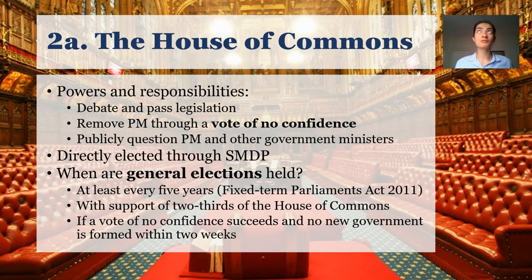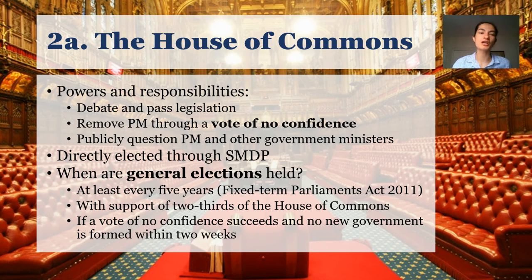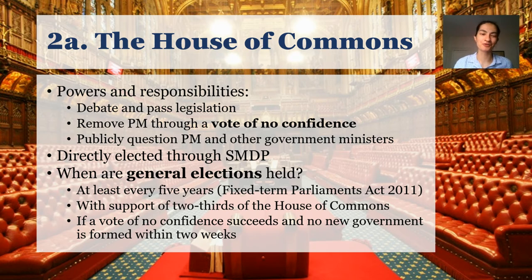Under a law called the Fixed Term Parliaments Act 2011, parliament decided that a general election must be held at least every five years. Before that, it was essentially in the power of the prime minister to advise the monarch to call a new general election anytime they felt it would be politically advantageous. Under the Fixed Term Parliaments Act, it's a little bit more difficult to call a general election. The last election as of this recording was in 2019, so in principle the next general election will be no later than 2024.